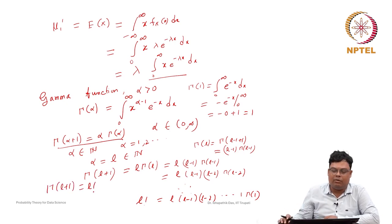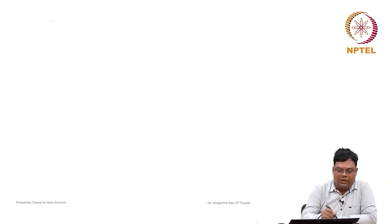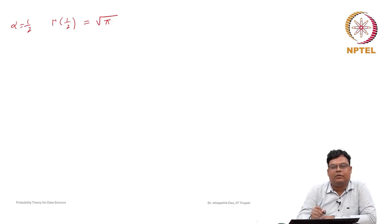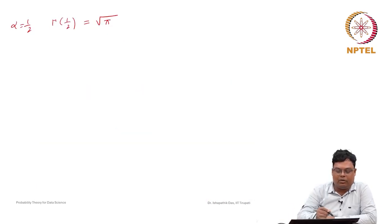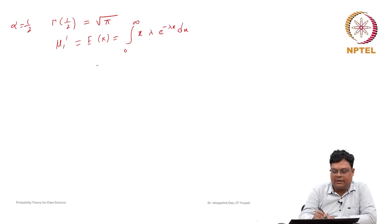These are properties of the gamma function we will use for computation. Now we find the expected value of x: mu_1' = E[x] = integral from 0 to infinity of x * lambda * e^(-lambda*x) dx. Lambda is a constant, so it is taken outside. We use the transformation z = lambda*x, so dz = lambda*dx and x = z/lambda.